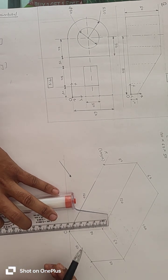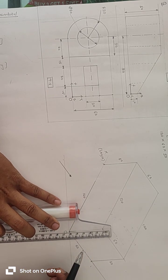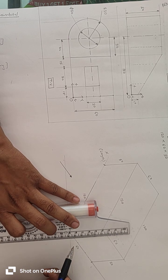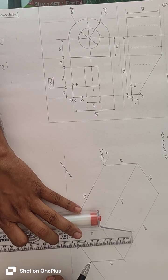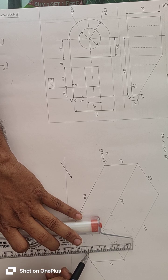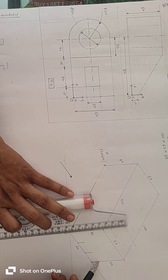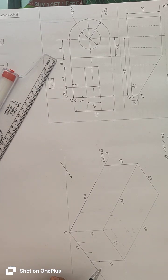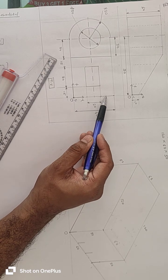We will draw a one centimeter line from these points, parallel to the z-axis. Now we can see here it is a regular line.